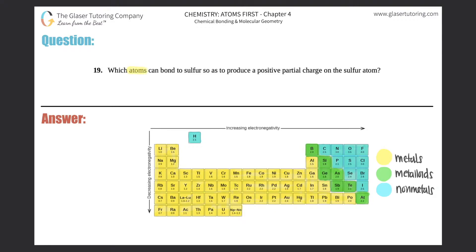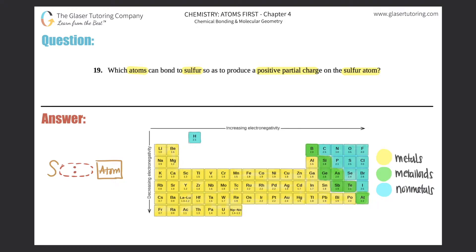Question 19: which atoms can bond to sulfur to produce a positive partial charge on the sulfur atom? So we have sulfur forming a bond with some sort of atom — I'll just put a box here and say 'atom.' We're not specifying whether it's a covalent or ionic bond, just an interaction. This space will house the two electrons that sulfur is going to be interacting with.